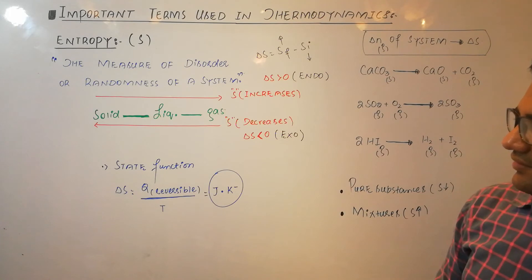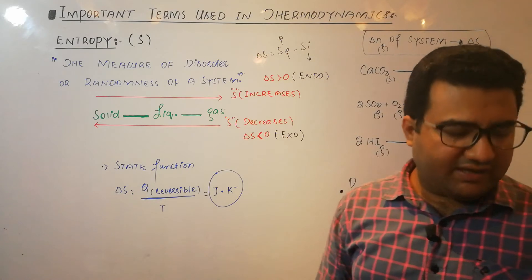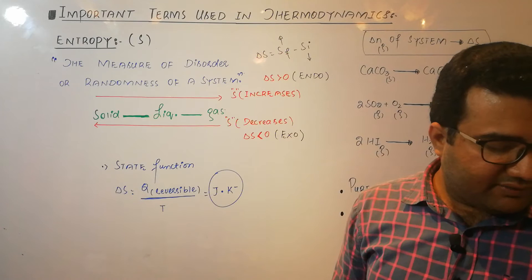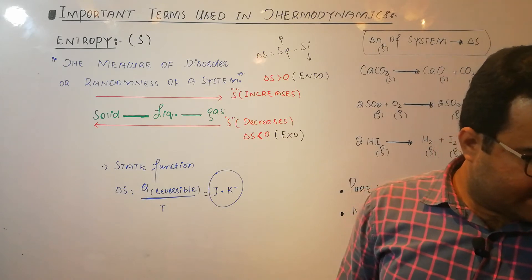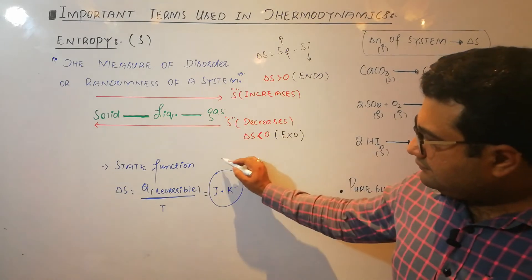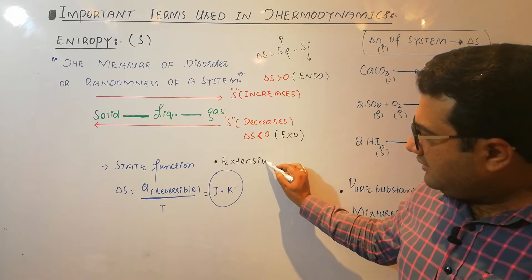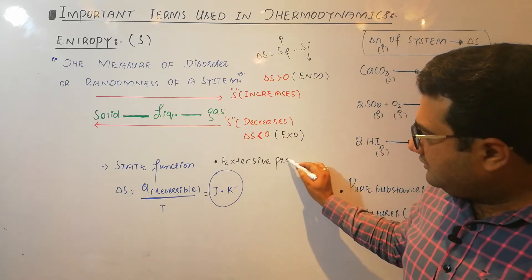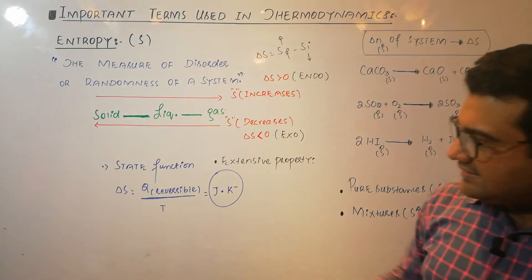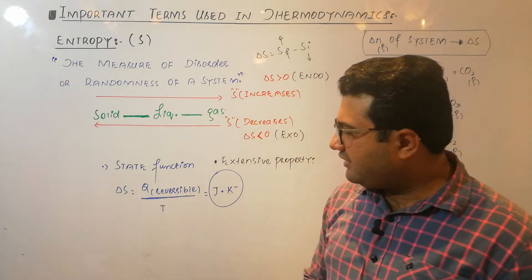Like other physical quantities, entropy is also a state function — it depends only on the state of the system, not on how that state was achieved. It is also an extensive property, related to the quantity of matter. To measure delta S, use the formula Q reversible divided by T, where the heat given or removed must be exchanged very slowly.